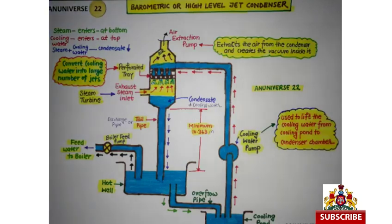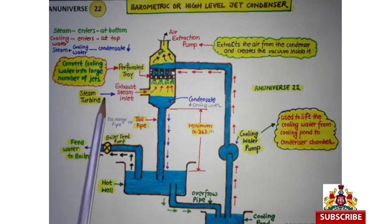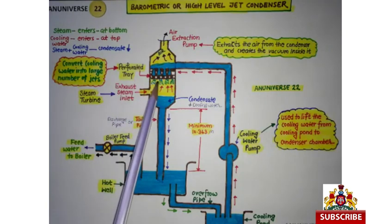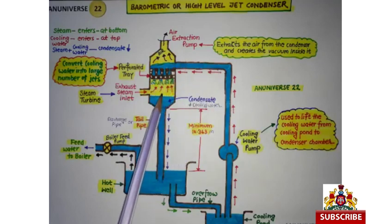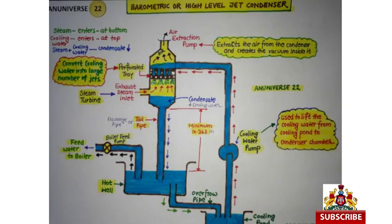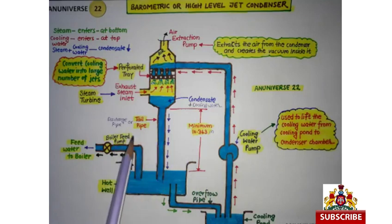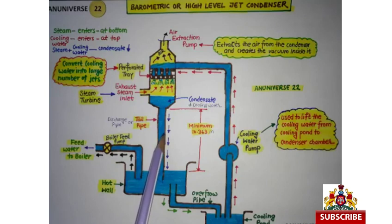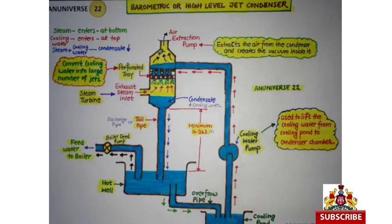इस प्रकार से Barometric और High Level Jet Condenser काम करता है। इसमें Steam Turbine से आने वाली Steam का flow Upward होता है और Cooling Water का flow Downward होता है, इसलिए इसे Counter Flow Jet Condenser भी कहते हैं। इसकी Working Low Level Jet Condenser की तरह ही होती है, शिर्फ इसमें Cooling Water Pump और एक Discharge Pipe लगी होती है, जबकि Low Level Jet Condenser में Discharge Pipe की जगह Condensate Extraction Pump लगा होता है और Cooling Water Pump की जरूरत नहीं होती।